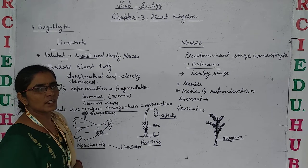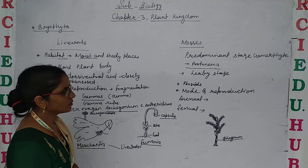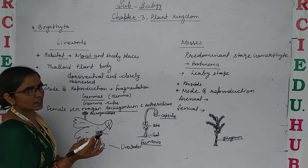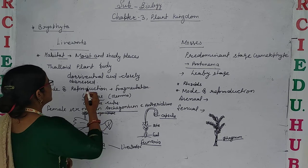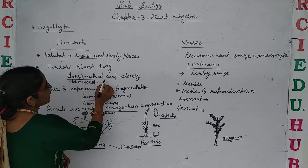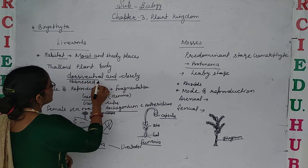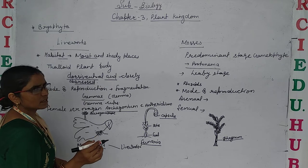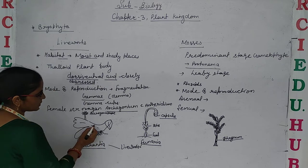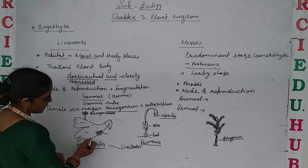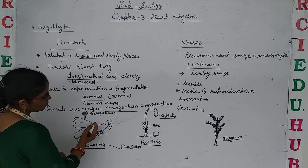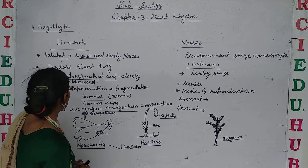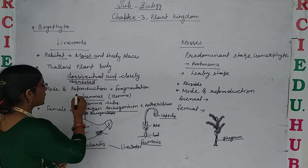The plant body is thaloid — it means not well differentiated. And it has a dorsiventral and closely appressed thallus, as is visible in the case of Marchantia. It is dorsiventral thallus.